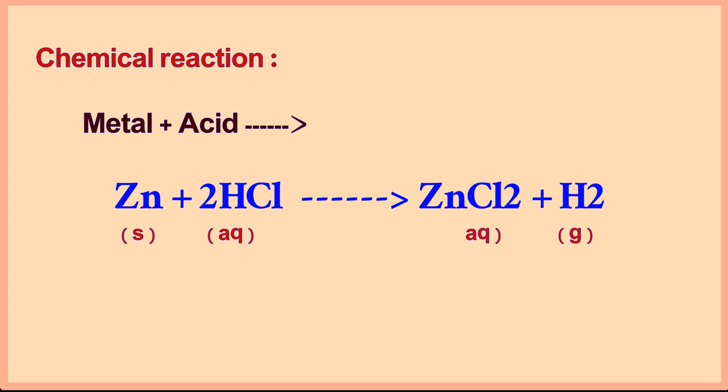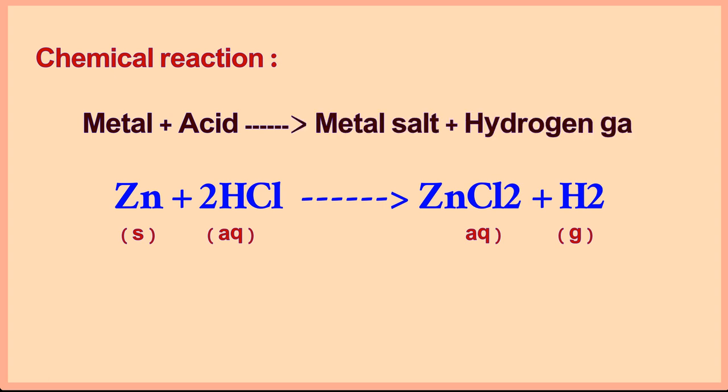Let us see the chemical reactions. Metal plus acid gives metal salt plus hydrogen gas. The chemical reaction is: Zn(s) + 2HCl(aq) → ZnCl₂(aq) + H₂(g). Here, S means solid — zinc is a solid; Aq means aqueous solution — HCl is aqueous solution; ZnCl₂ is also aqueous solution; G means gas, so hydrogen is a gas.